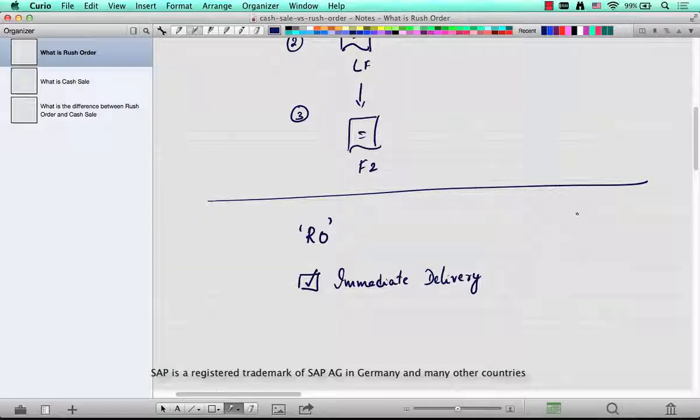any document type, as soon as you create your order, your delivery will be created without somebody having to do it explicitly. So as soon as you save the order, your delivery will be created.